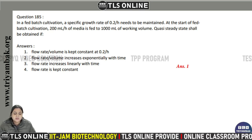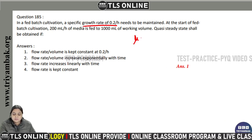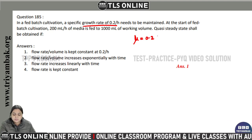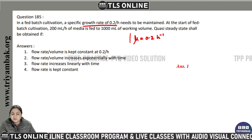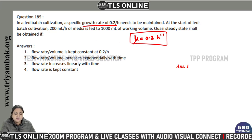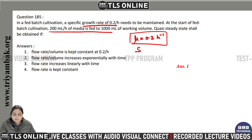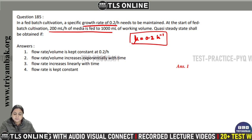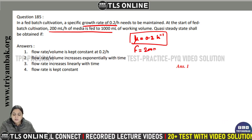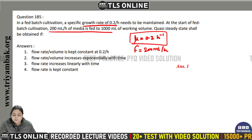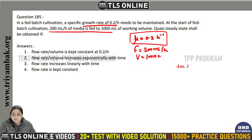In a fed-batch cultivation, the specific growth rate (μ) is given as 0.2 per hour and needs to be maintained. At the start of the batch cultivation, the flow rate given is 200 mL per hour, and the media is fed to a working volume of 1000 mL.